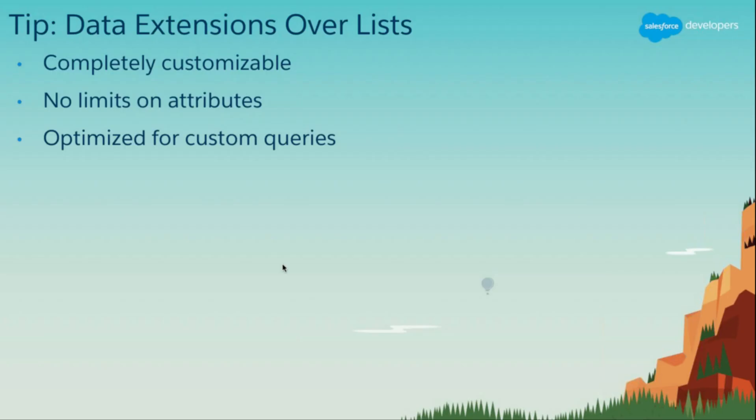A little tip: you've got different ways to set up data in the marketing cloud. There is a simpler way using lists, but if you're just getting started, I'd recommend starting with data extensions — it's definitely a best practice, and you'll run into limitations with lists over time. There's no limit on attributes in a data extension where you will bump into limits with lists. If you're already on lists, you can switch over or start using data extensions for newer marketing campaigns. It's much more customizable and is certainly the future of the marketing cloud.